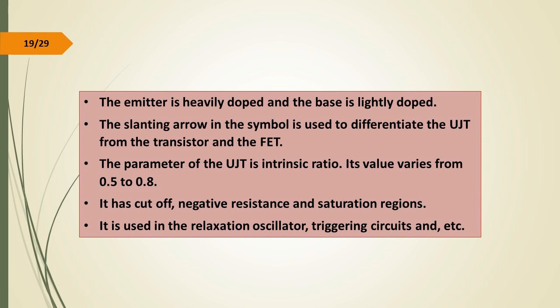The key parameter of the UJT is the intrinsic standoff ratio, whose value varies from 0.5 to 0.8. It has cut-off, negative resistance, and saturation regions. It is used in relaxation oscillators and triggering circuits.